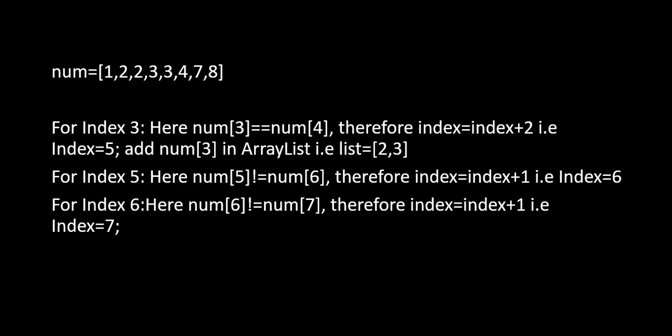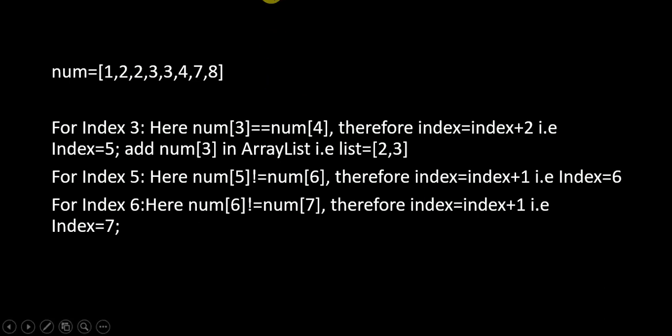We add 2 to our array list. For index 3, the element at index 3 is equal to the element at index 4, so we add 3 to our array list — the list becomes [2, 3]. For index 5 and index 6, the elements are not equal to adjacent elements so we increment the index by 1. Finally, our array list contains 2 and 3, so we return [2, 3].